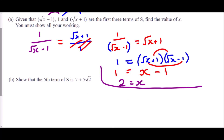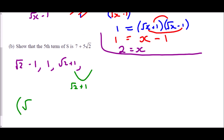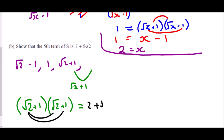Now we need to show that the fifth term of S is 7 + 5√2. With x = 2, the first three terms are (√2 − 1), 1, and (√2 + 1). The common ratio is (√2 + 1). To find the fourth term, we multiply (√2 + 1) by (√2 + 1): √2 × √2 = 2, plus √2, plus √2, plus 1, which simplifies to 3 + 2√2.